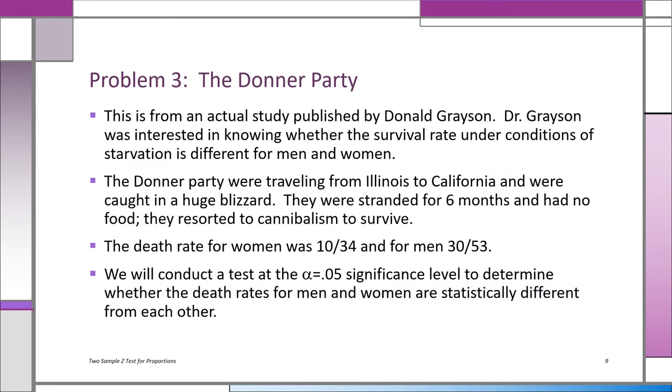We're going to examine real data. This is from the Donner Party. The study was actually published by Donald Grayson, and he wanted to know whether the survival rate under conditions of starvation is different for men and women. In other words, are men or women more likely to survive? Who's more likely to survive when there's no food? Well, you can't do an experiment like this obviously—you can't starve people—but they looked at the Donner Party, and you can see a little bit about the background.